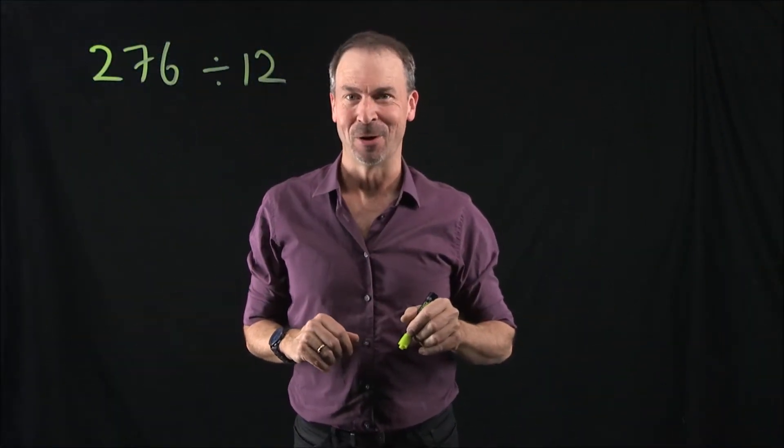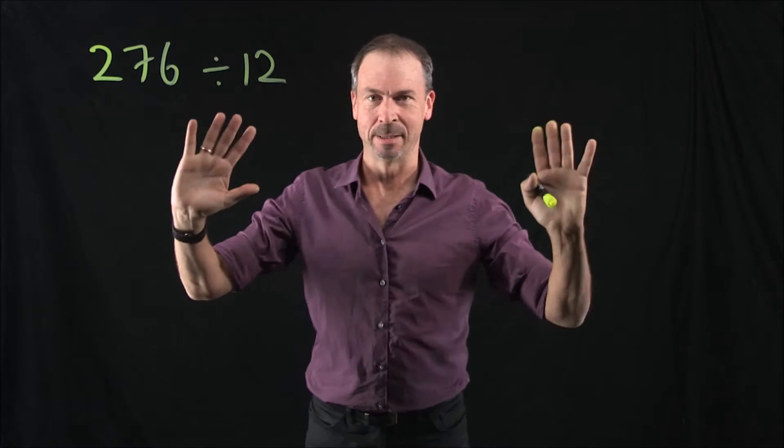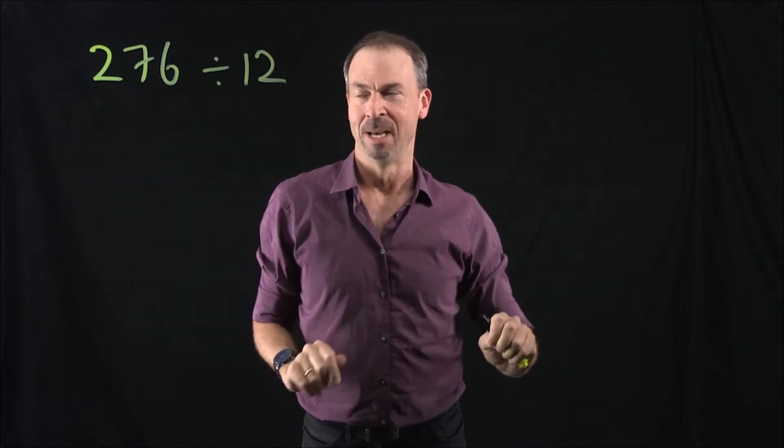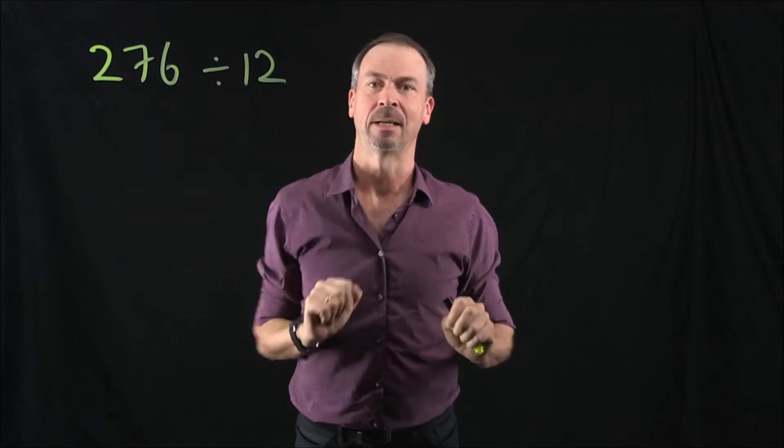Welcome to Chapter 5 of our Exploding Dots story. So far we've done addition, some multiplication, we've done subtraction. We're missing division. We do division problems like this: 276 divided by 12.